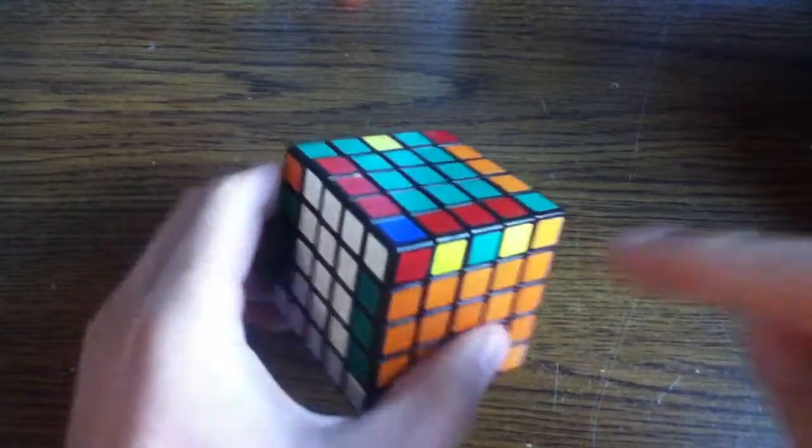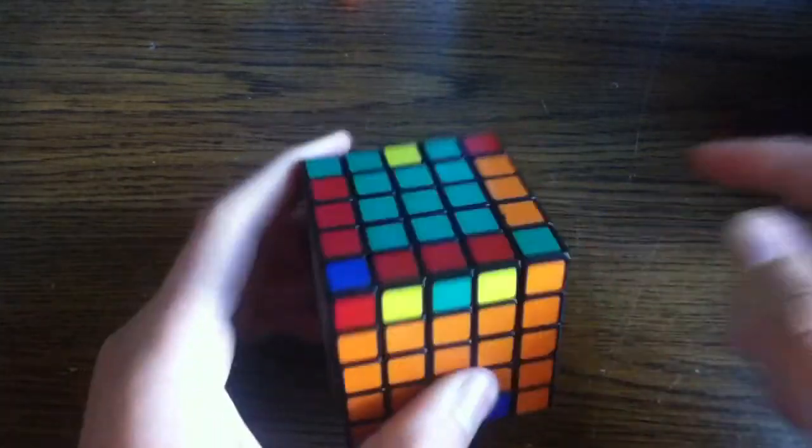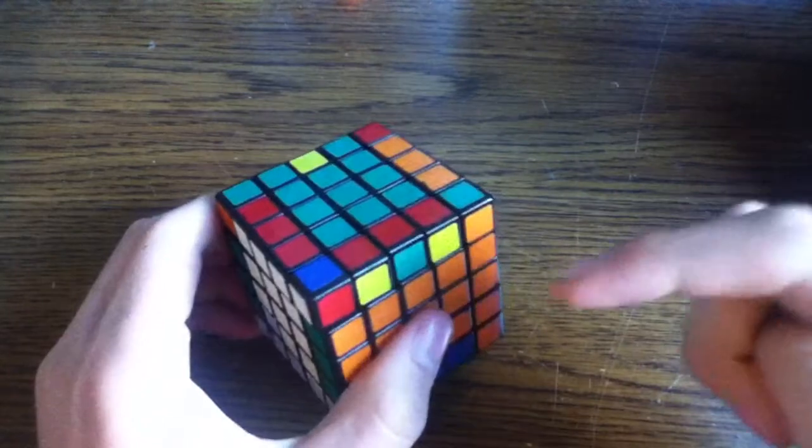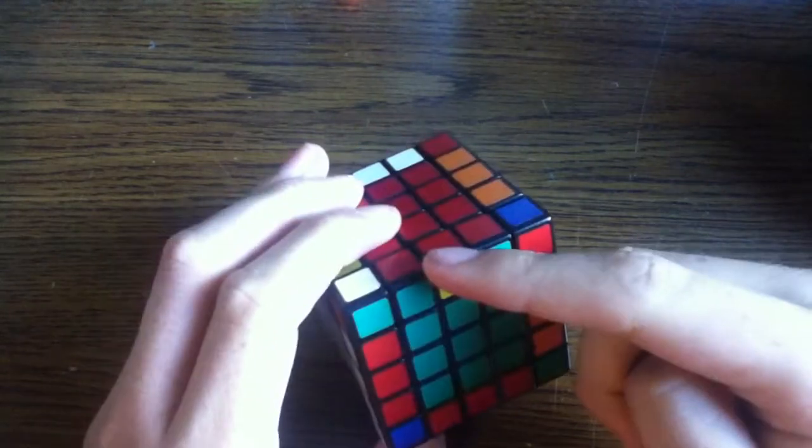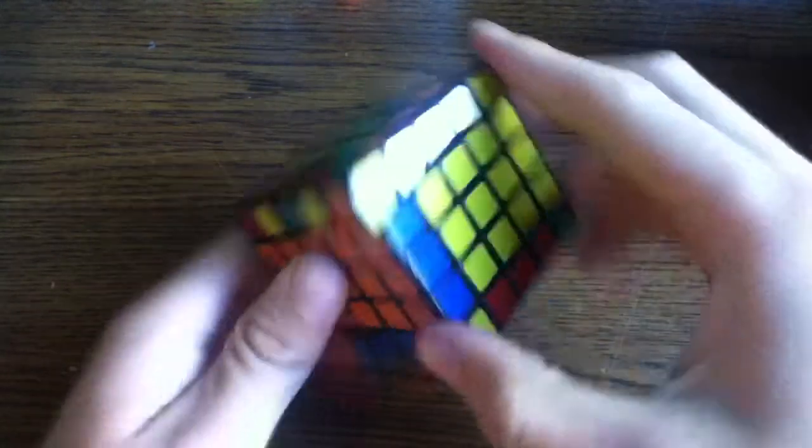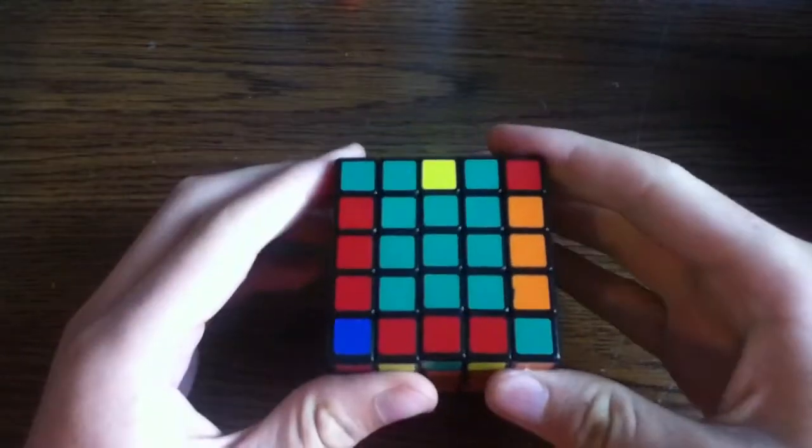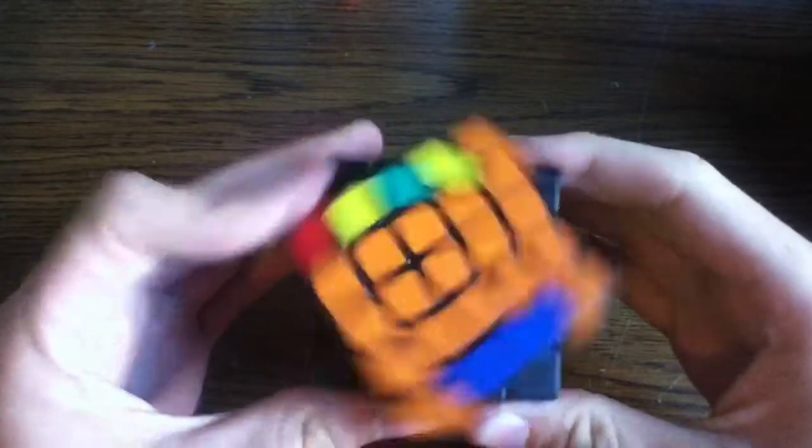But Cube Master, what if I run into a situation like this? Well, young Padawan, if you run into a situation where this piece and this piece need to be switched without changing anything else in the cube, that is where your Edge of 11 algorithm comes into play.